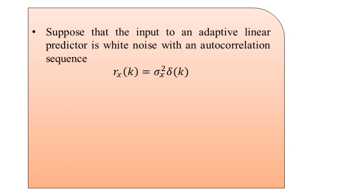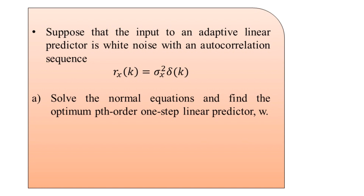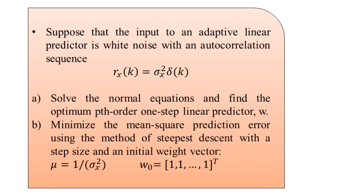The problem is divided into two parts: Part A and Part B. Part A asks us to solve the normal equations and find the optimum p-th order one-step linear predictor W. In Part B, the question is to minimize the mean square prediction error using the method of steepest descent with a step size mu equal to 1 over 5 times sigma_x squared, and an initial weight vector W_0 equal to the transpose of [1, 1, 1, ..., 1] for the order of the filter.